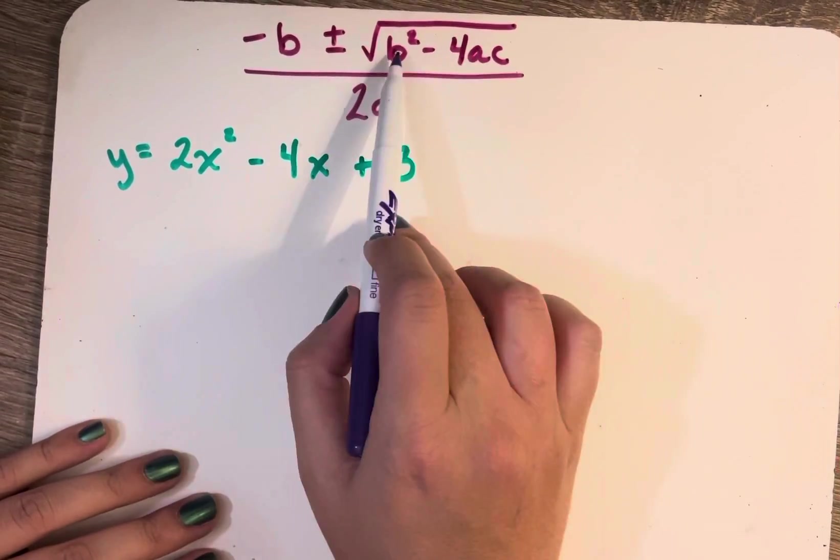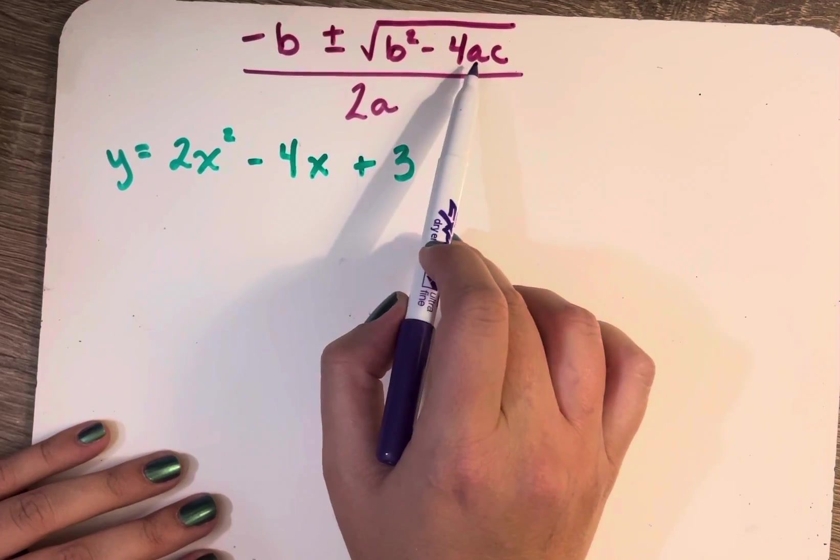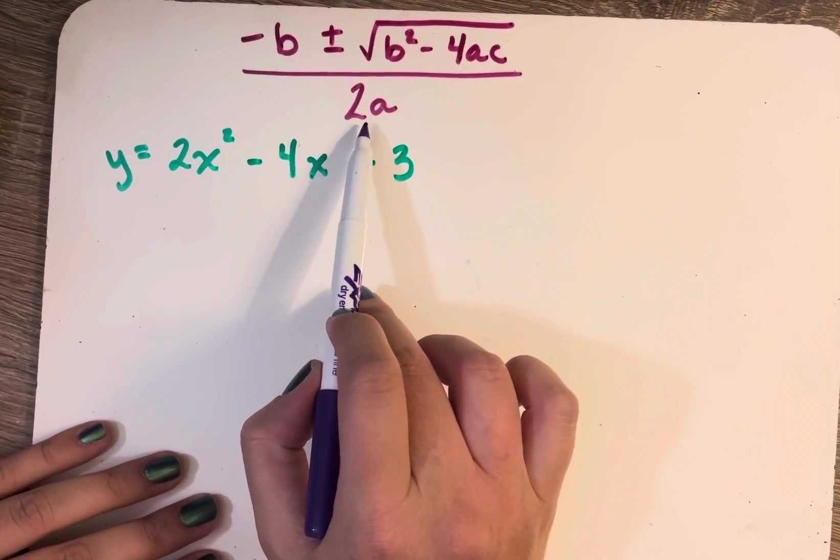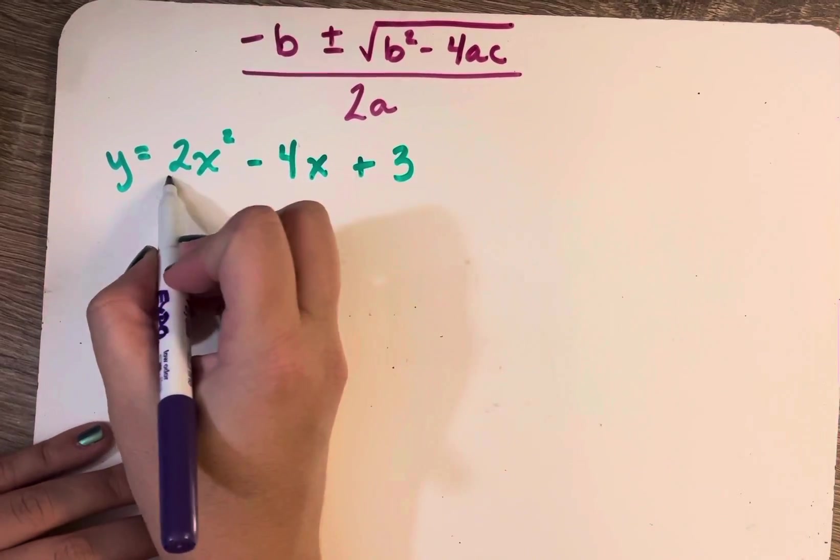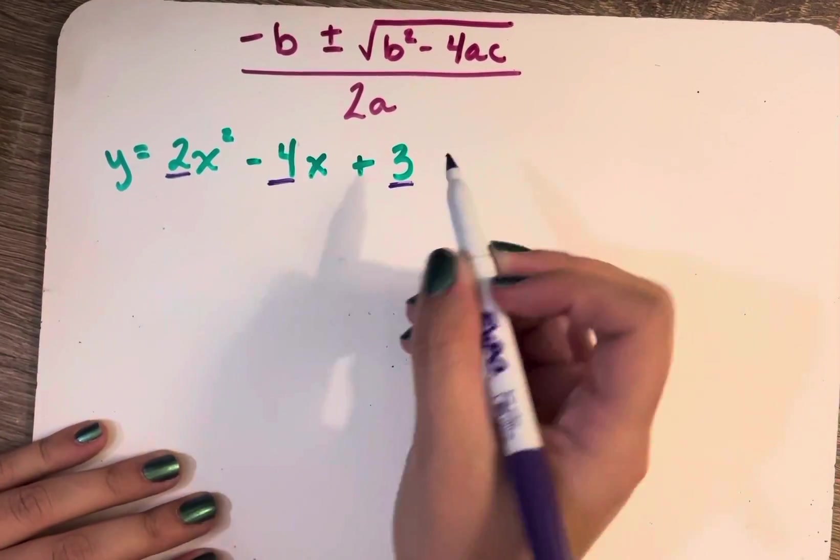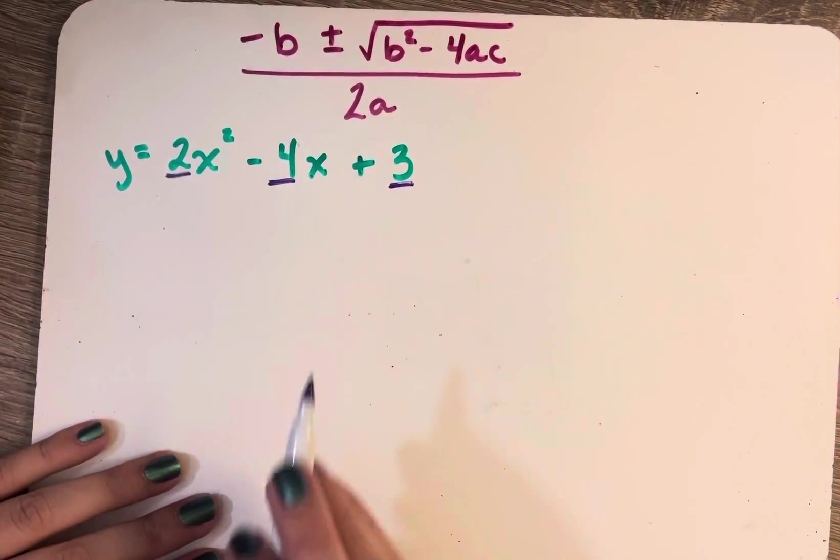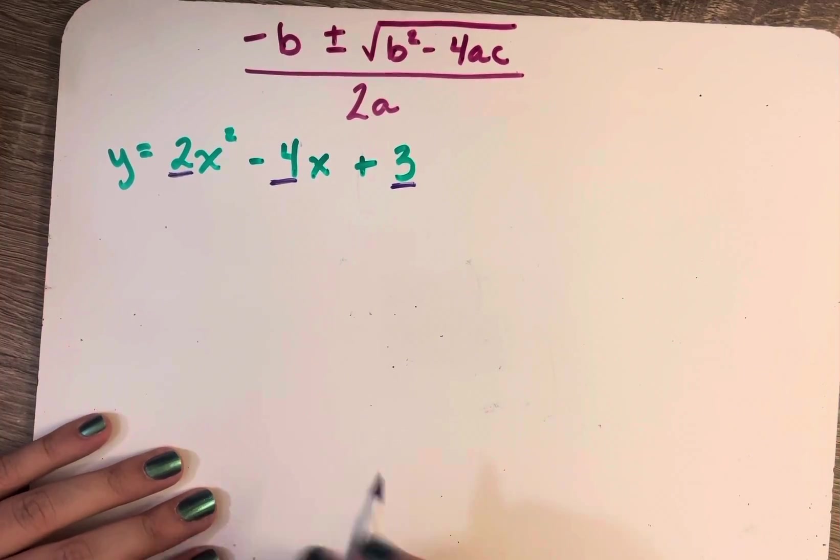The square root of b squared minus 4ac, and that entire thing is over 2a. So a, b, and c are the coefficients of each term in my quadratic function.